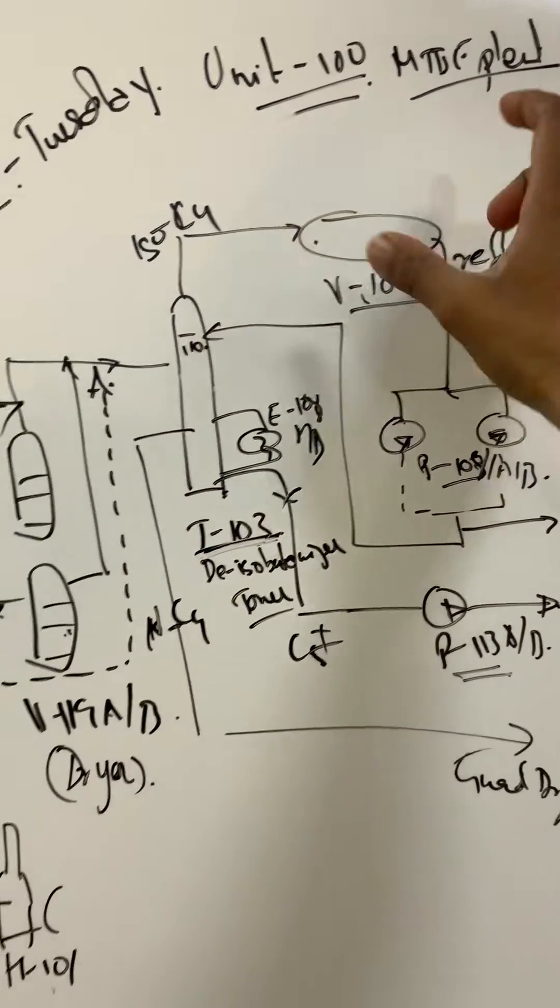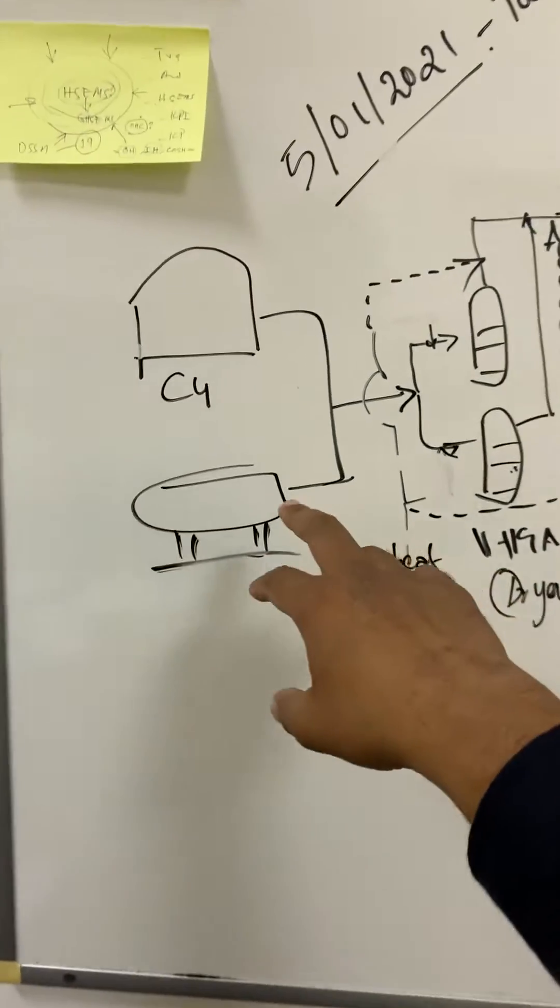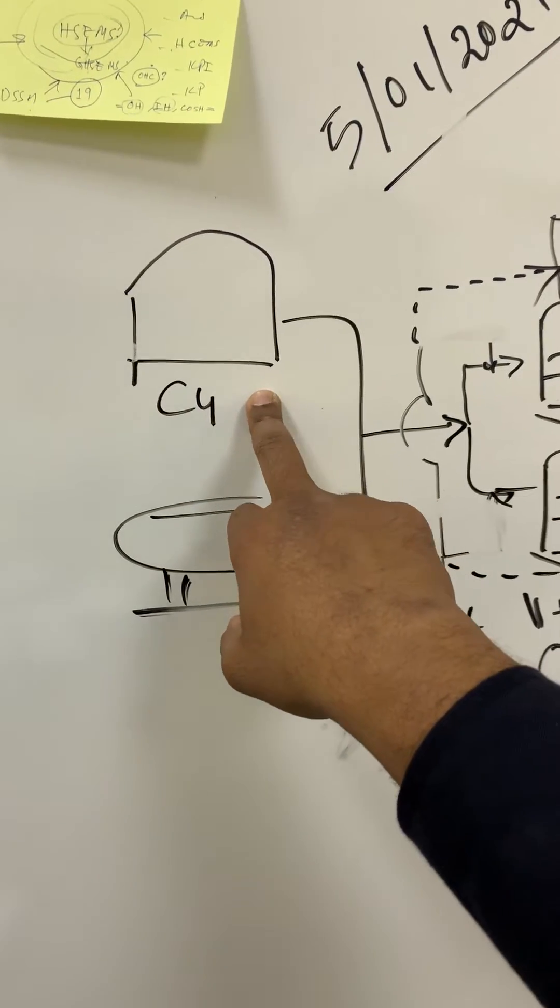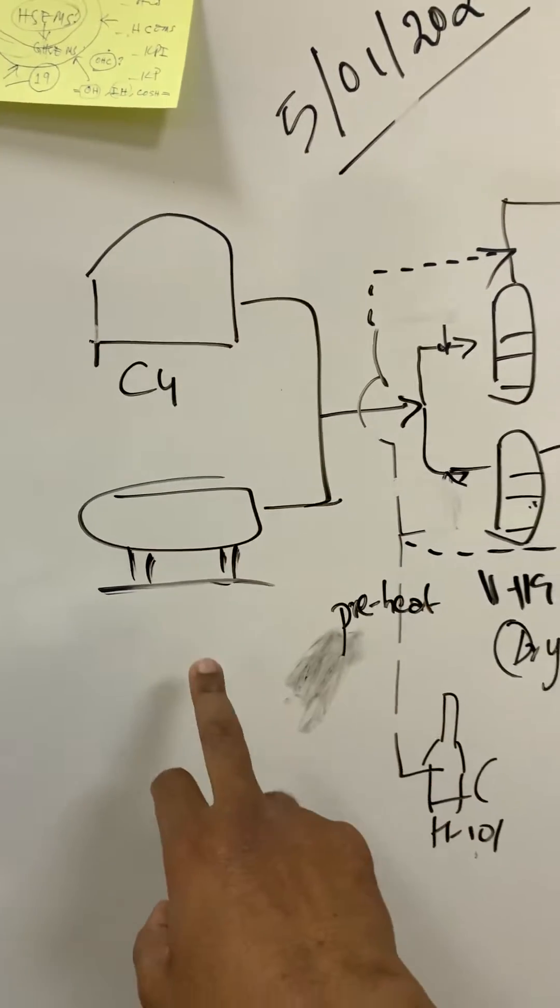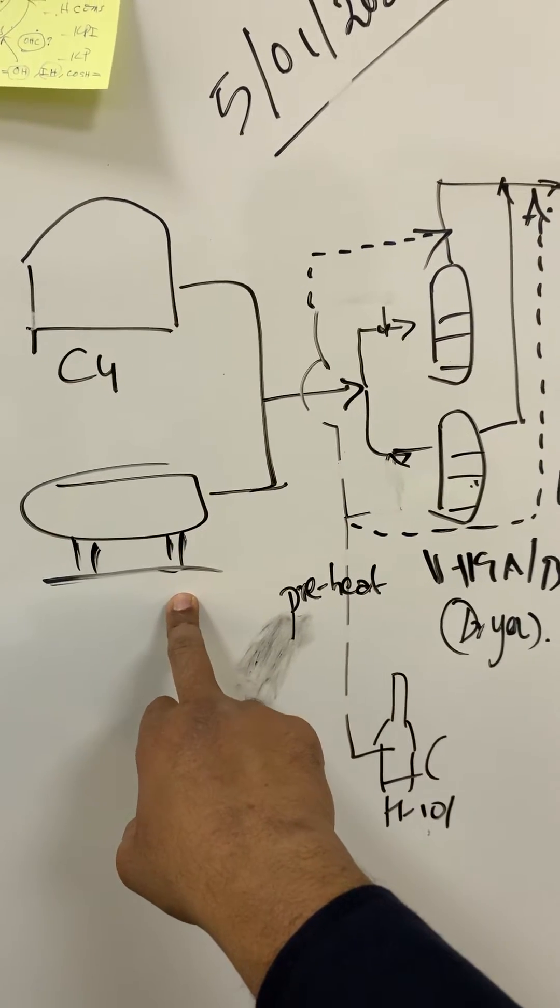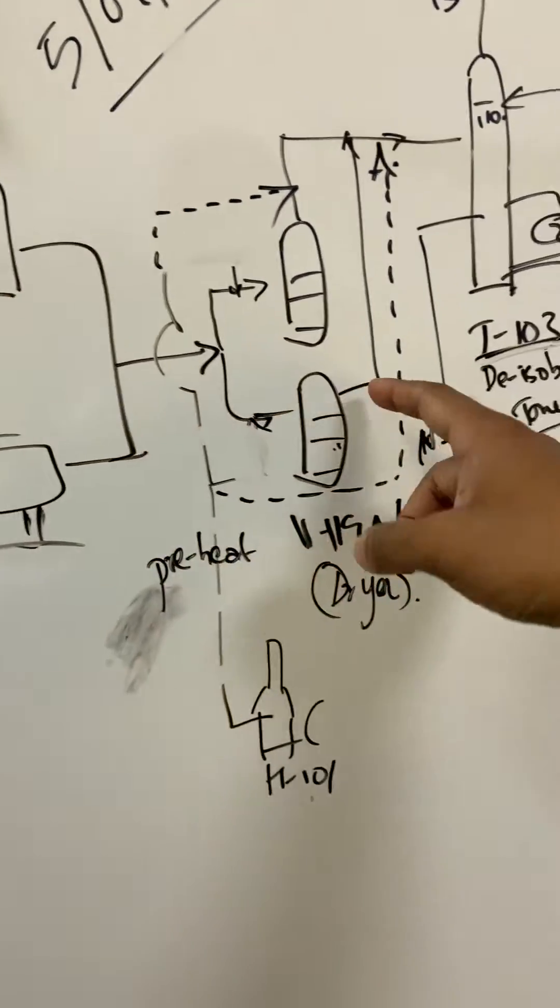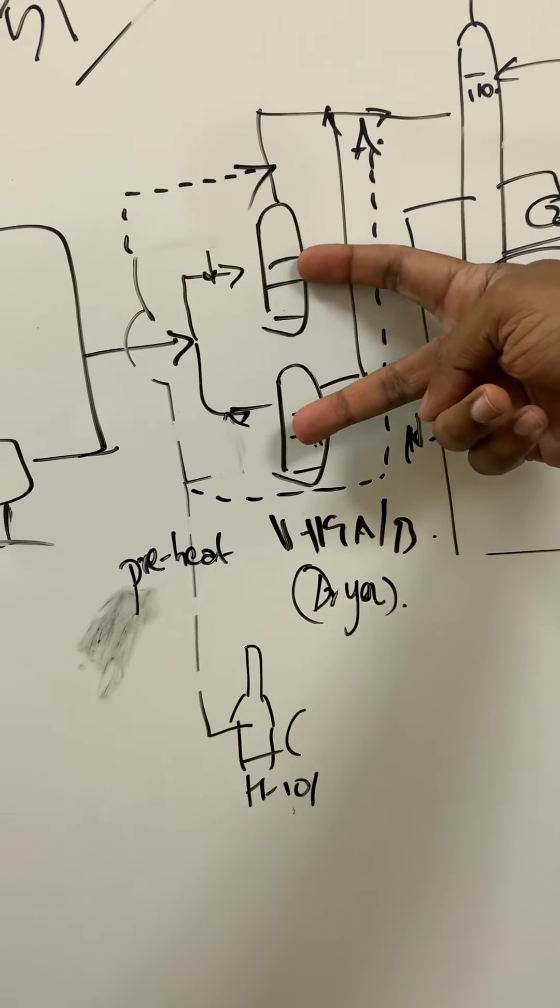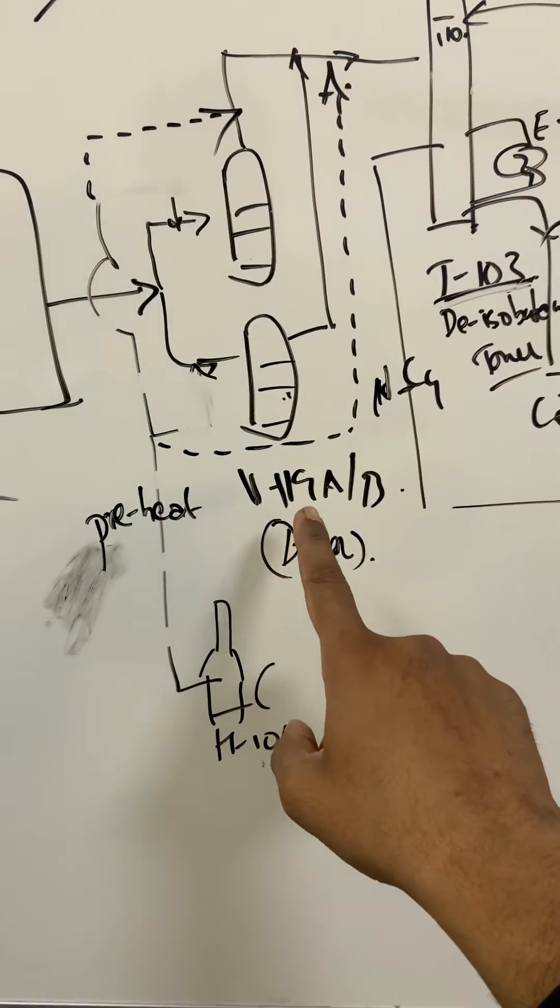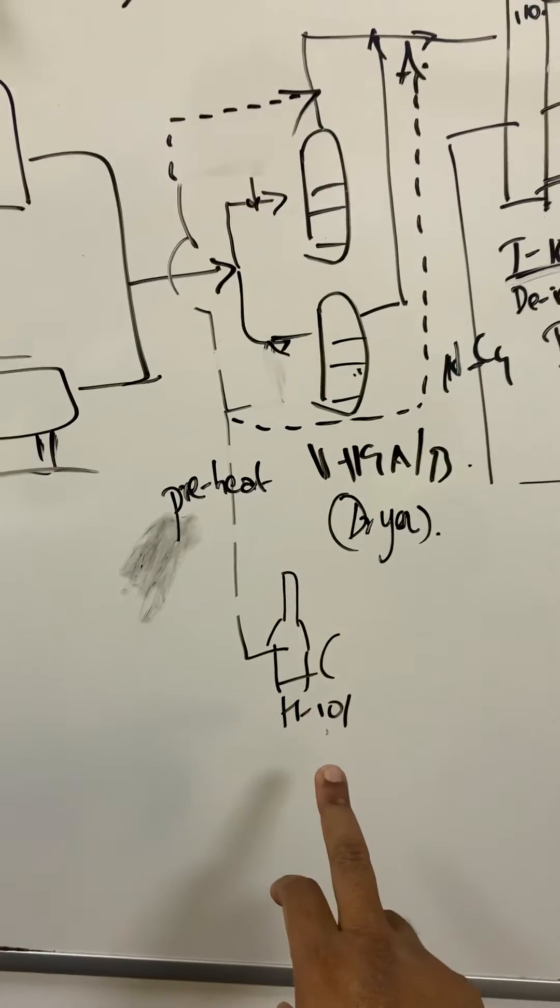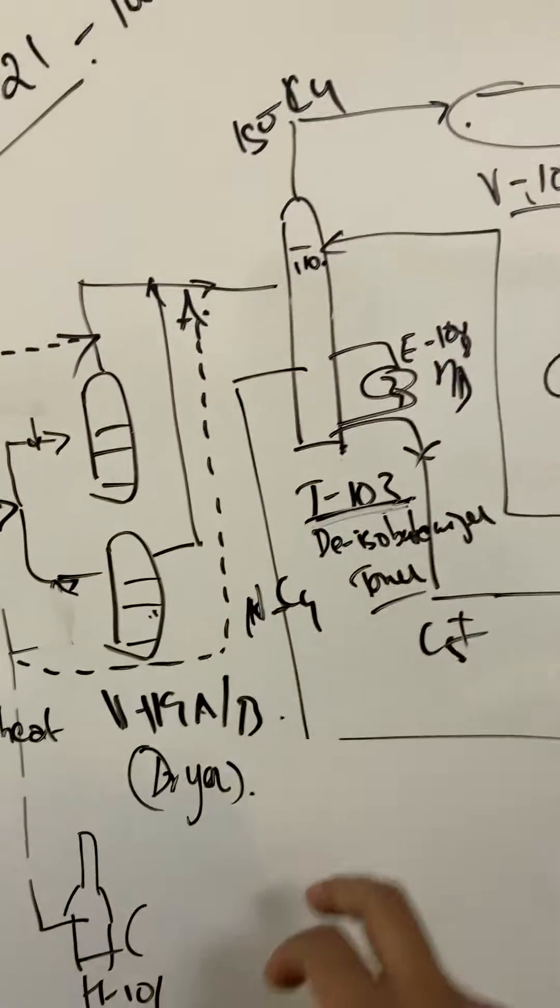So here, let's look at the equipment. This is the cryogenic C4 tank, our C4 bullets butane. We've got feed dryers, butane dryers V119 AB. We've got a preheater H101.